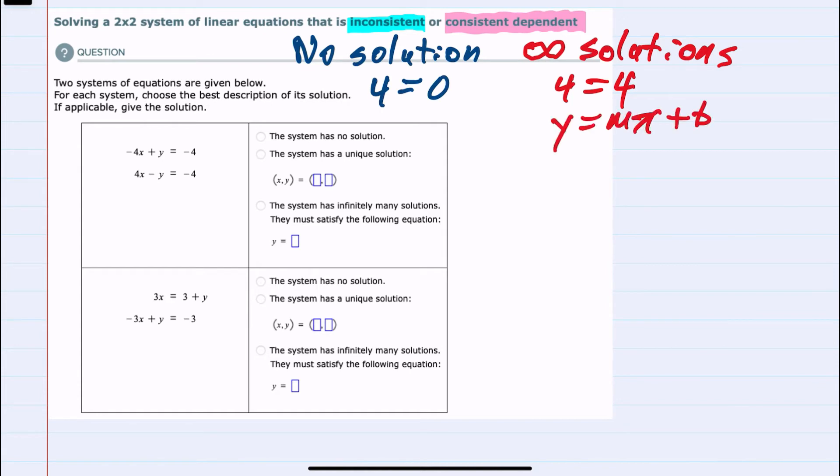The other alternative would be to actually have a single point solution where the two lines cross, and where they cross, that point is the solution, some coordinate x and y. Those represent our three choices here: the system has no solution, the system has a single point solution, or the system has infinitely many solutions where we would be able to find the equation of the line.